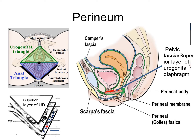Just above Colles' fascia, you have the deep fascia of this region — the perineal membrane — just above the superficial fascia. Above that, the red color marking indicates the pelvic fascia. These three fascias, attached one above the other in the urogenital triangle, enclose two spaces: the superficial perineal pouch and the deep perineal pouch.